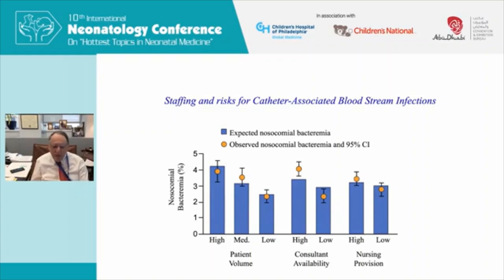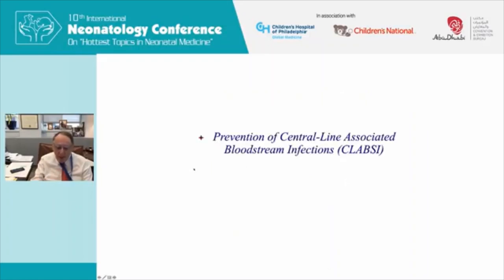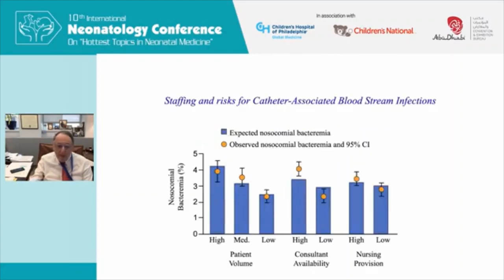This is a survey study from the United Kingdom of about 85 NICUs. They looked at nosocomial bacteremia in relation to patient volume, consultant availability, and nursing provision. Units with high patient volume had more infections — they probably cared for sicker babies. The number of nurses present did not determine rates of nosocomial bacteremia. However, higher numbers of consultants correlated with more nosocomial bacteremia, and lower numbers of consultants with less — and I interpret this as meaning that doctors have a hard time washing their hands consistently.